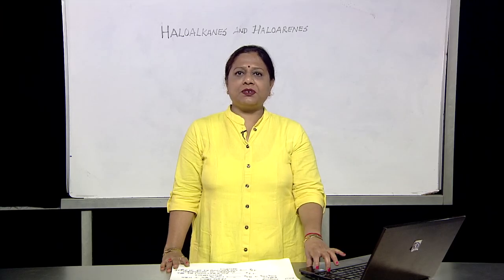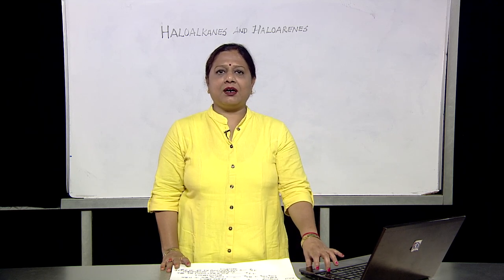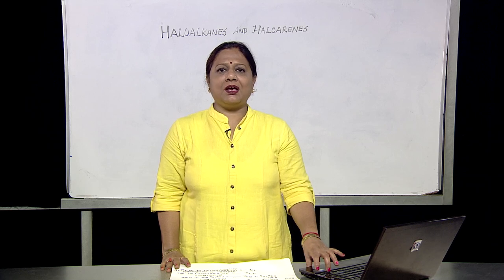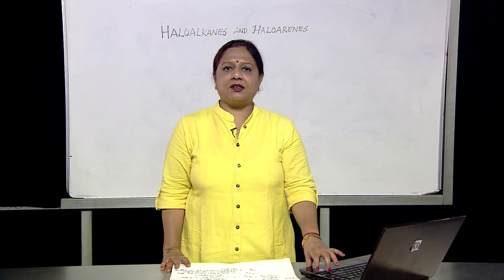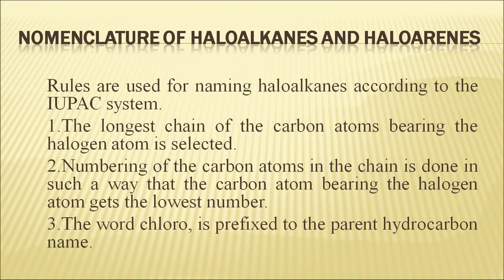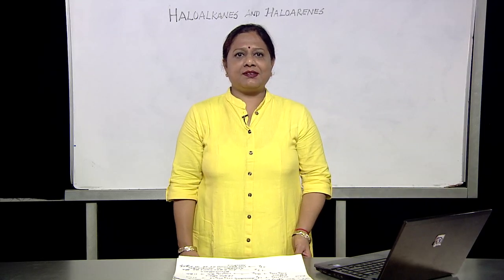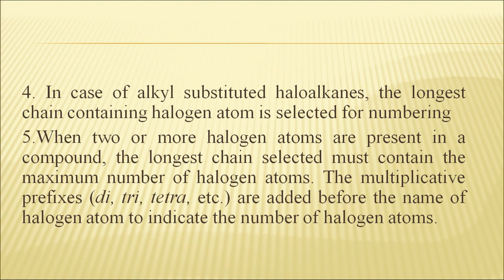The same naming rules from the previous chapter are followed for haloalkanes and haloarenes. The longest chain of carbon atoms bearing the halogen atom is selected. Numbering is done so that the carbon atom bearing the halogen atom gets the lowest number. The word chloro is prefixed to the parent hydrocarbon name. For alkyl-substituted haloalkanes, the longest chain containing the halo atom is selected, and it must contain the maximum number of halogen atoms.